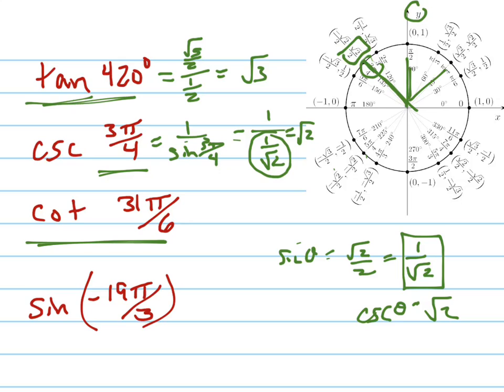Let's do cotangent of 31π over 6. 31π over 6 is, there's 12π over 6. There's 24π over 6. So I need to go another 7π over 6, which is right there.